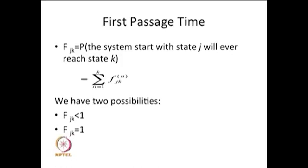So our interest covers both cases: less than 1 as well as equal to 1. When f_jk equals 1, that gives a probability distribution, and that distribution is called the first passage time distribution. This is the case of interest because whenever the system starts from state j, whatever be the number of steps, if you reach state k with probability 1, the whole probability mass is 1 and this is the distribution of the first passage time.